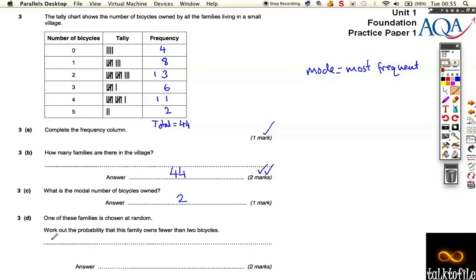Well fewer than 2 bicycles means that there's 12 people own 0 or 1 bicycle. So fewer than 2 doesn't mean you're not allowed 2, ok?